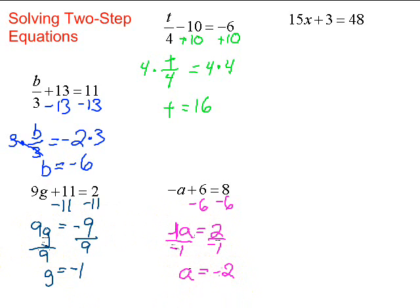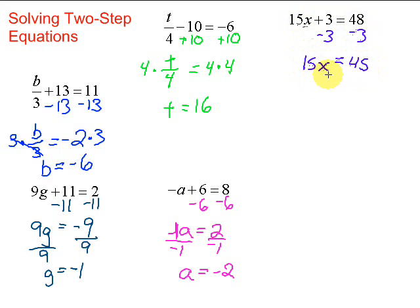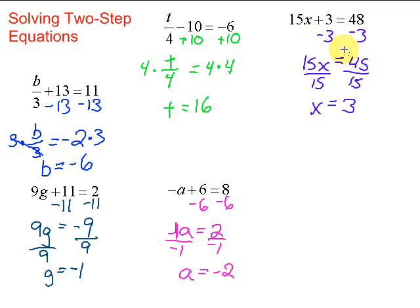Let's look at one final example. We've got 15x plus 3 equals 48. First step: get rid of the plus 3 by doing the opposite — minus 3 on both sides. Bring down what we have left: 15x equals 48 minus 3, which is 45. Then we have 15 times x — do the opposite, divide by 15 on both sides. We get x equals 45 divided by 15, which is 3. Remember, you can always double-check: 15 times 3 is 45, plus 3 is 48. It works!